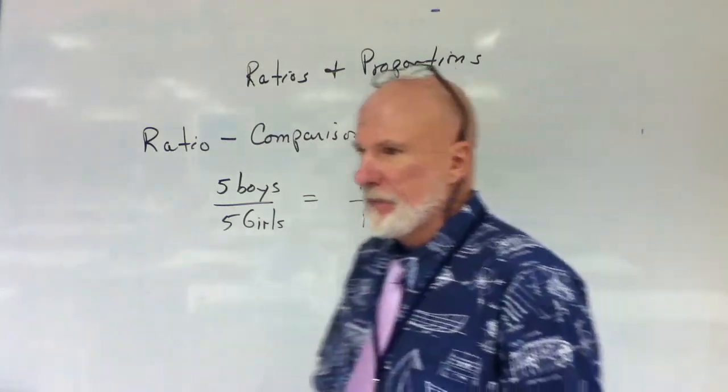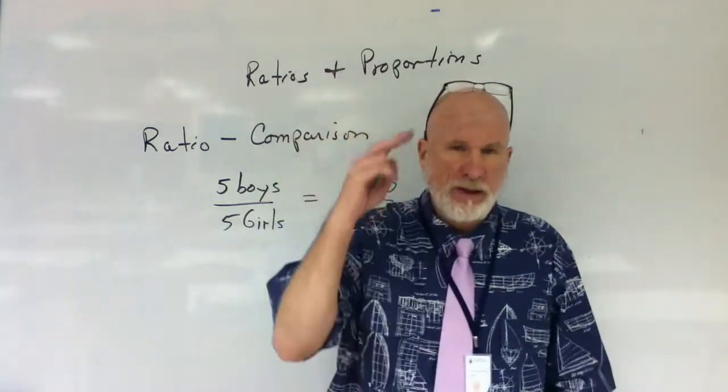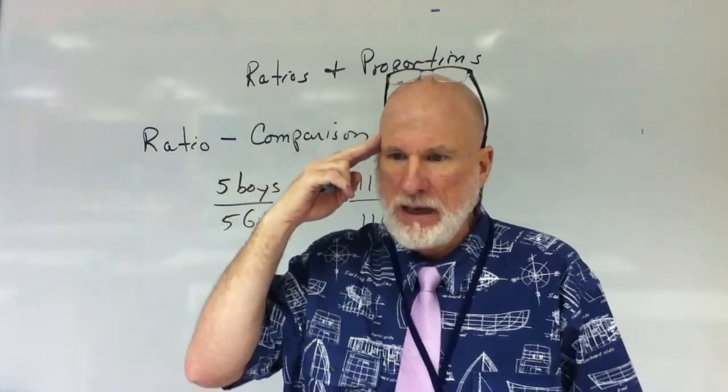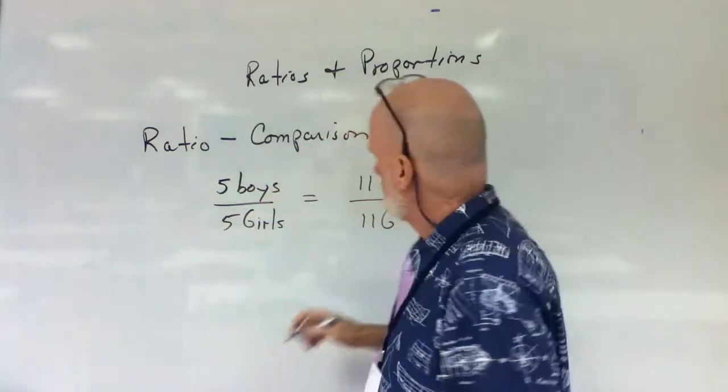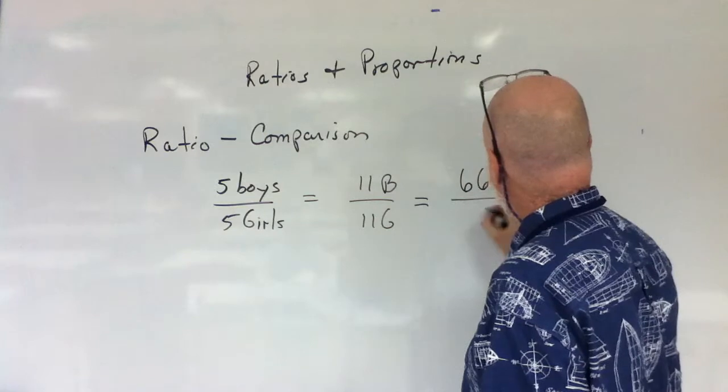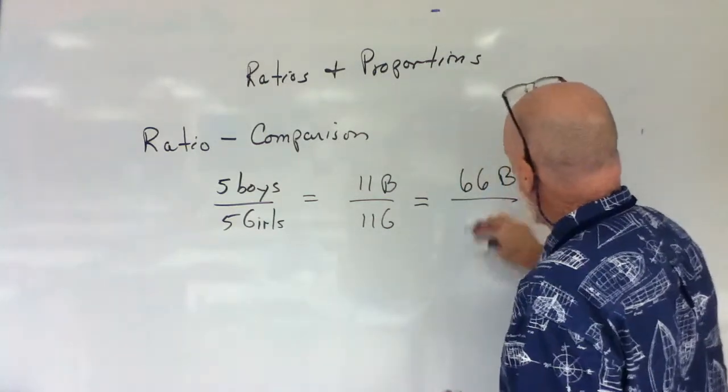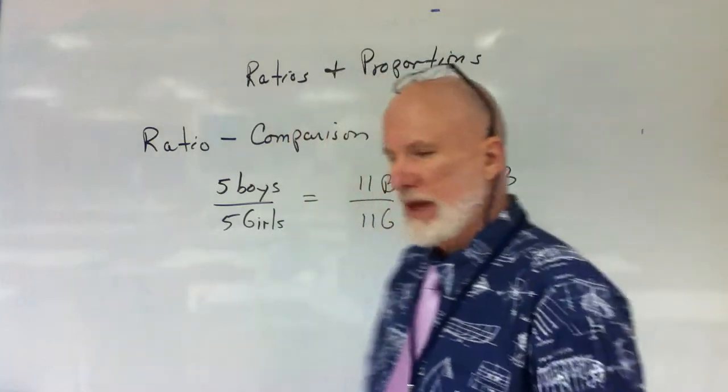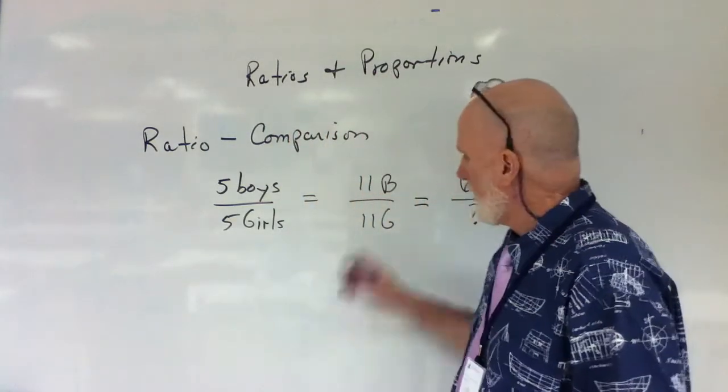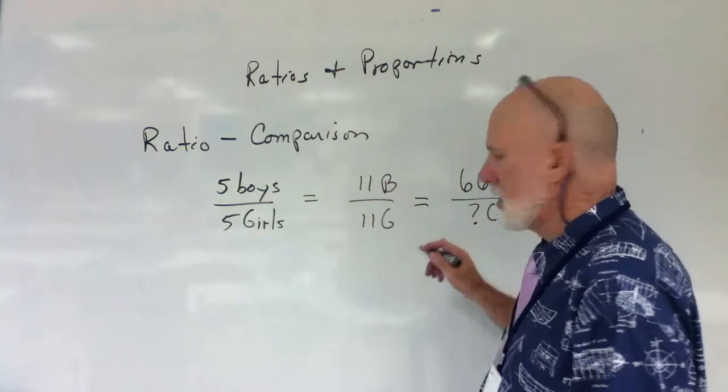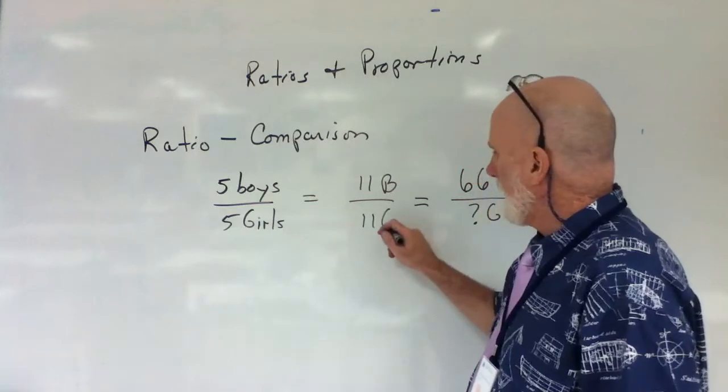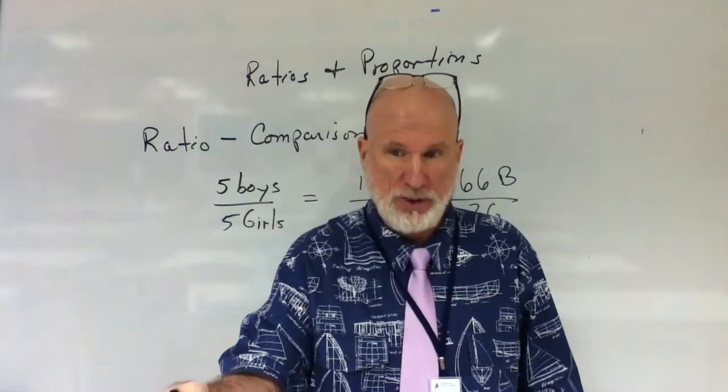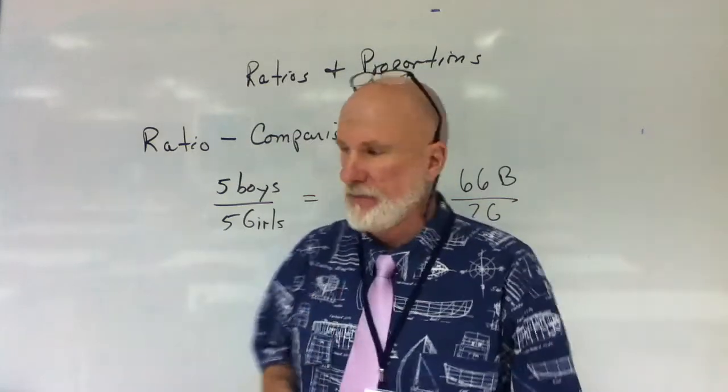Now, let's say I have a class with 66 boys. How many girls are there going to be, do you think? 66. How did you get that? Because they're all equal. If it's one to one, numerator equals denominator, right? Or you could say 11 times 66 divided by 11. Cross-multiply and divide, right?